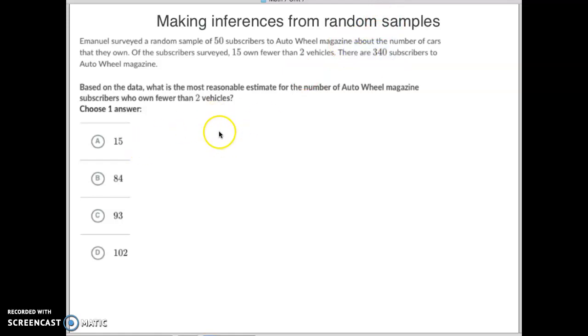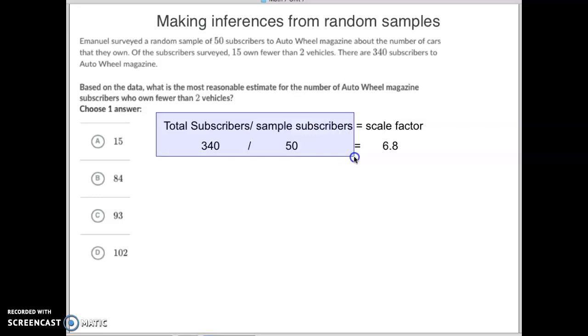Here's kind of a nice, easy way to think about this. What you want to do is first look at how many total subscribers there are, 340, and divide that by the sample size. In this case, there were 50 people in the sample size, which means the actual population is 6.8 times bigger than the sample size. So, whatever our answer for the sample was, we multiply that by 6.8 and we get our answer.